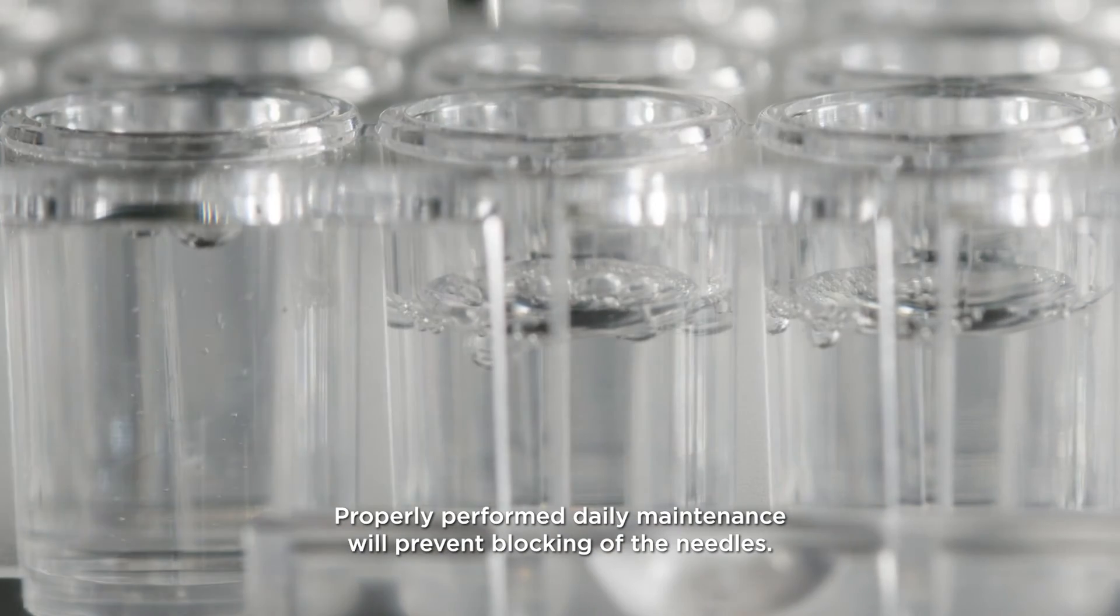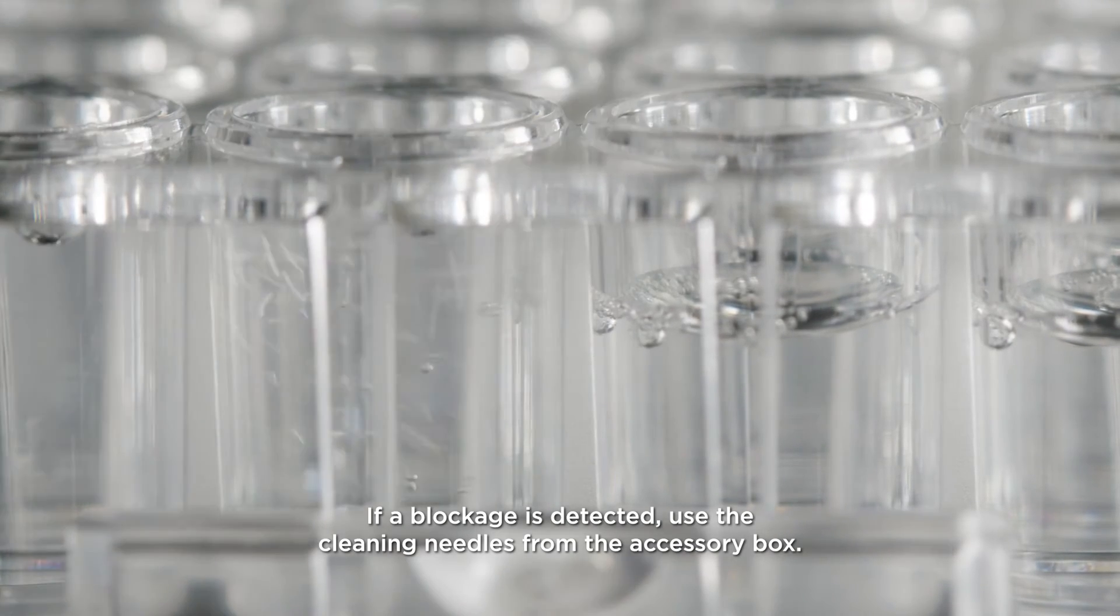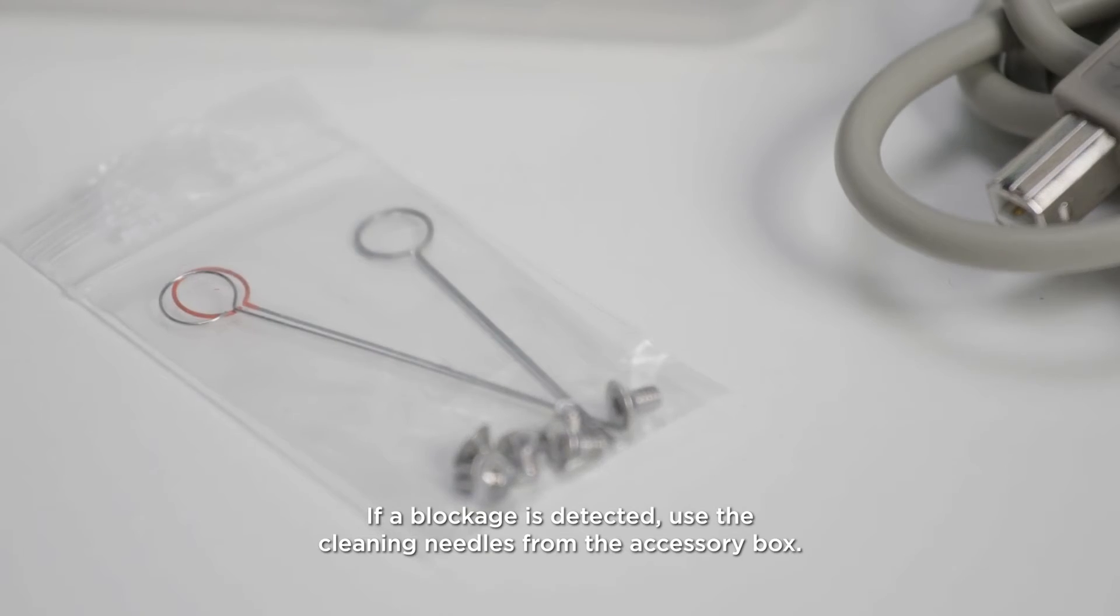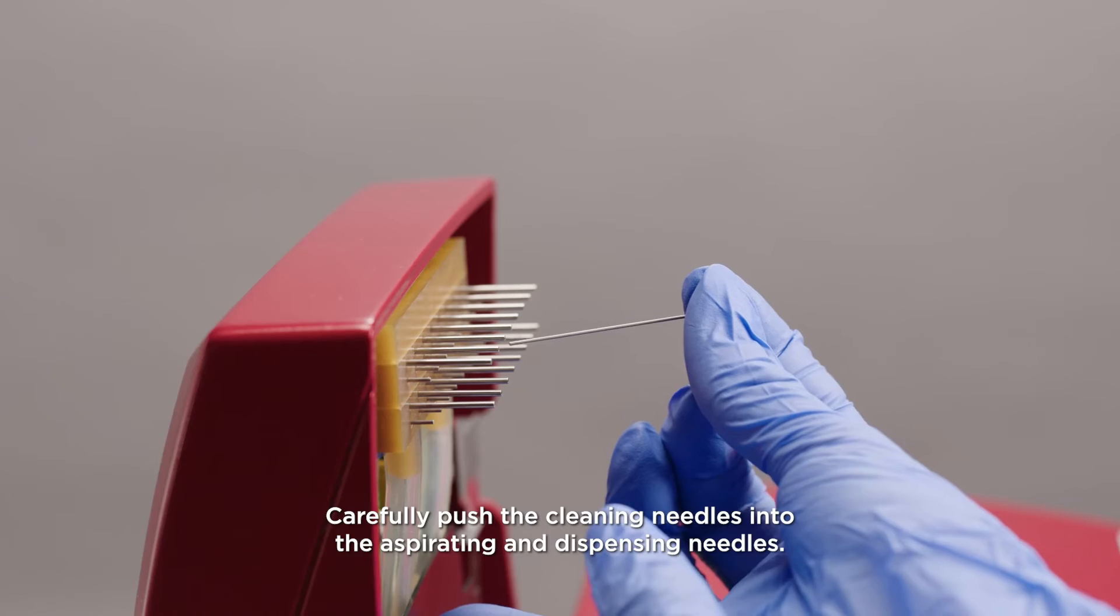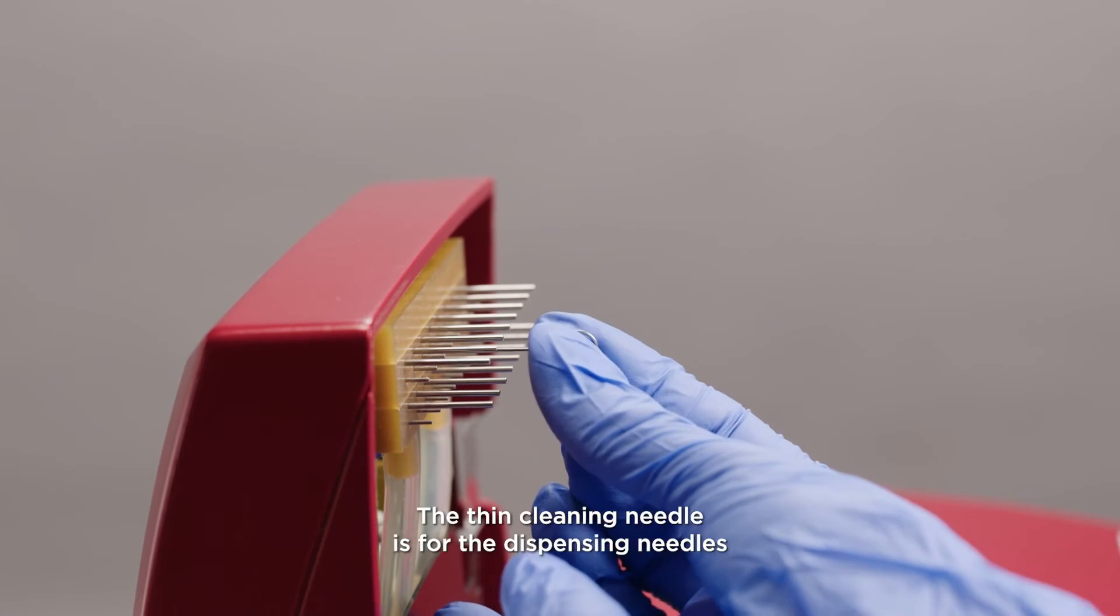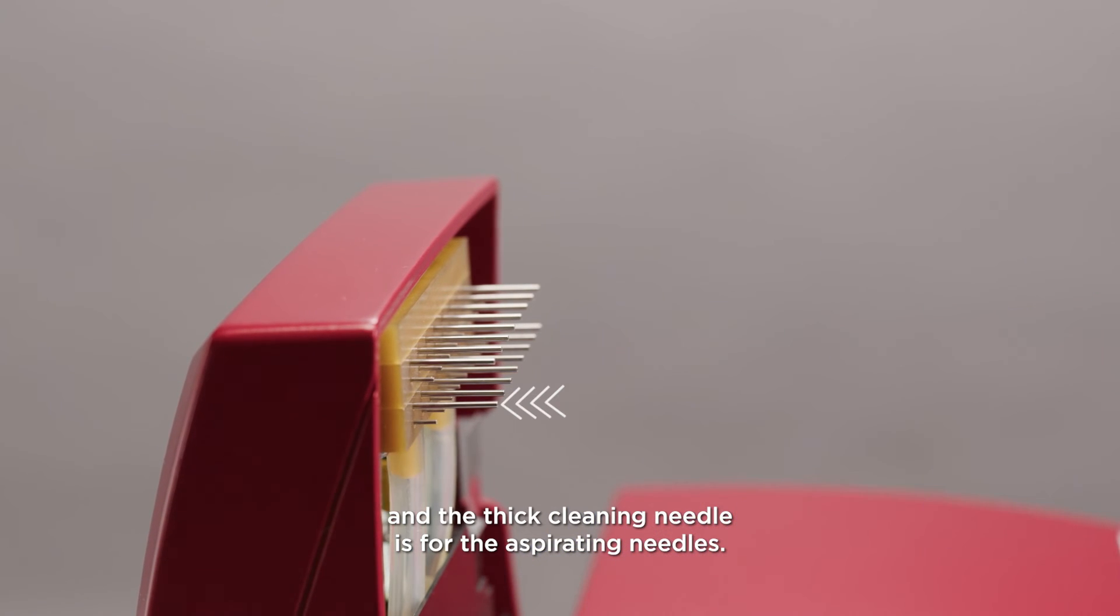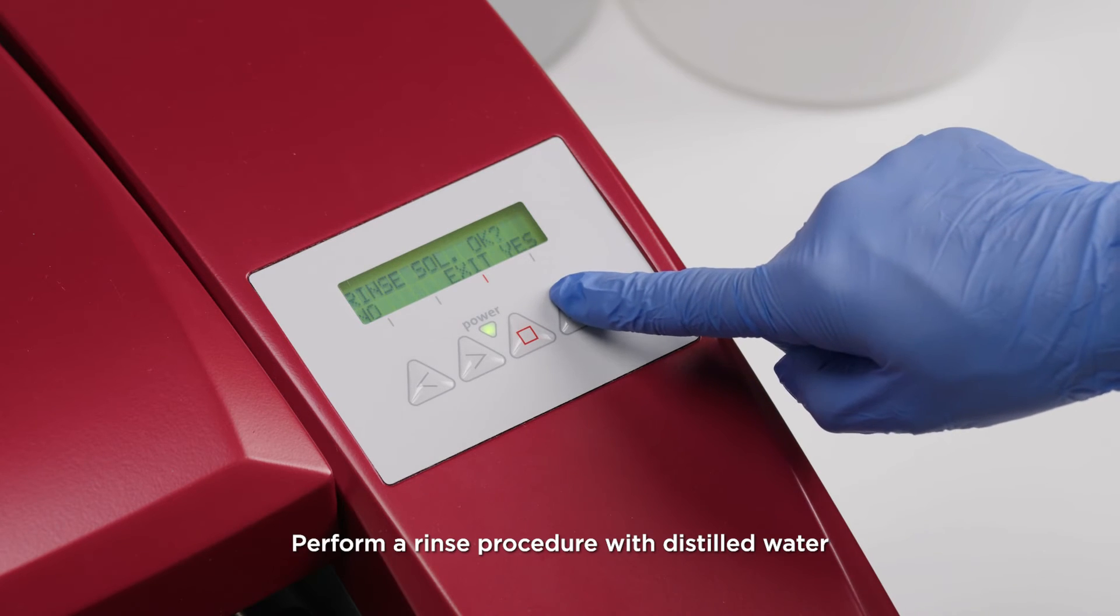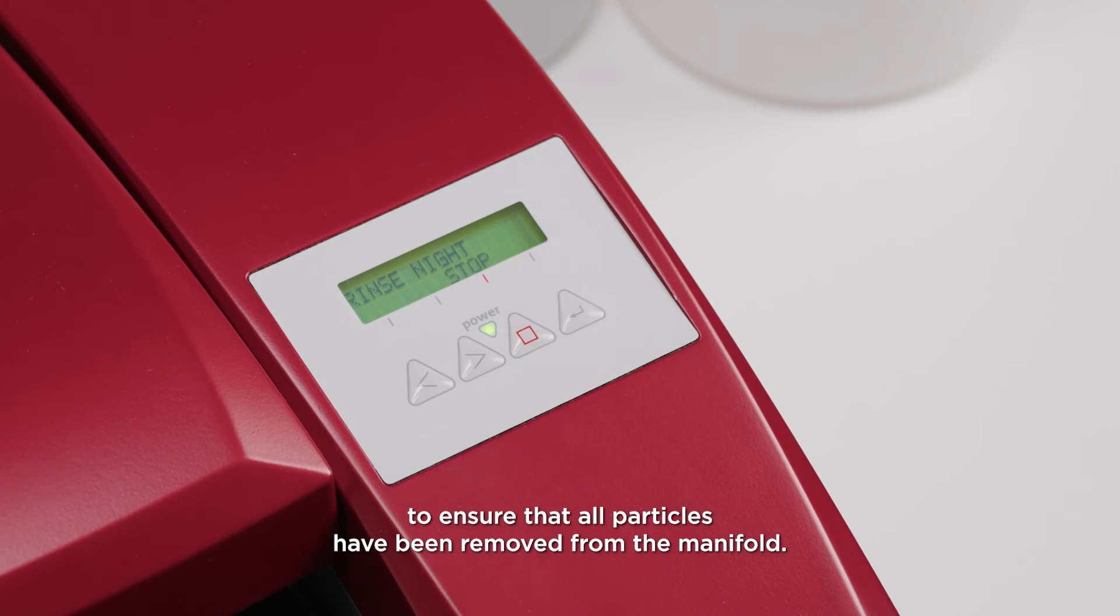Properly performed daily maintenance will prevent blocking of the needles. If a blockage is detected, use the cleaning needles from the accessory box. Carefully push the cleaning needles into the aspirating and dispensing needles. The thin cleaning needle is for the dispensing needles and the thick cleaning needle is for the aspirating needles. Perform a rinse procedure with distilled water to ensure that all particles have been removed from the manifold.